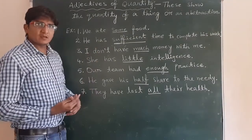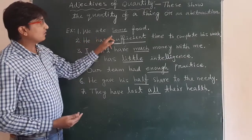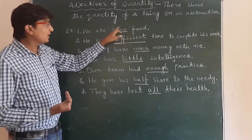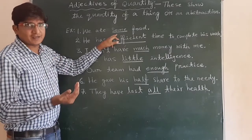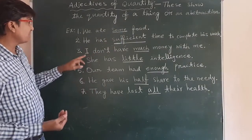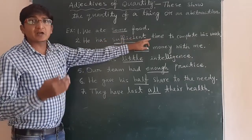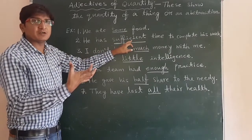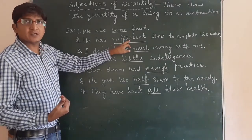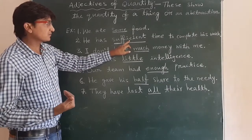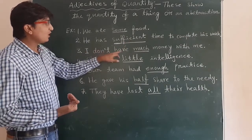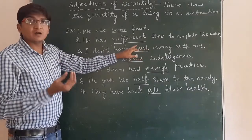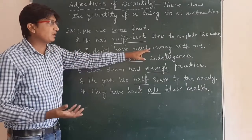Let us understand by looking at examples. First: 'We ate some food.' How much food? Some food — so 'some' is a quantity adjective. Second: 'He has sufficient time to complete his work.' How much time? Sufficient — so 'sufficient' is an adjective of quantity. Third: 'I don't have much money with me.' How much money? Much — so 'much' is an adjective of quantity.